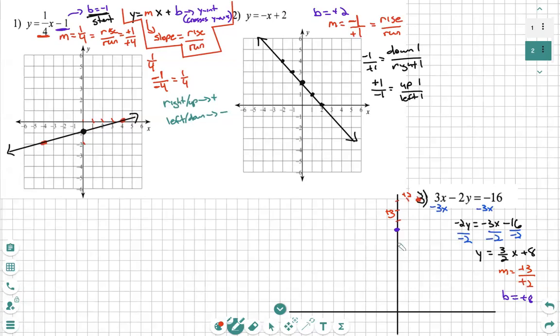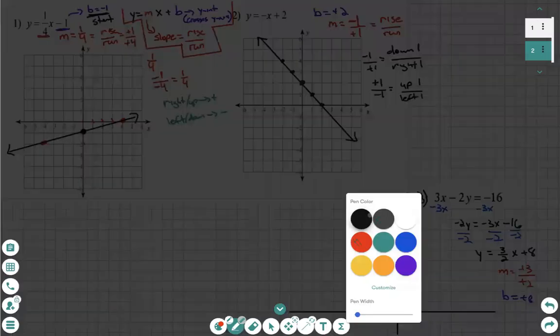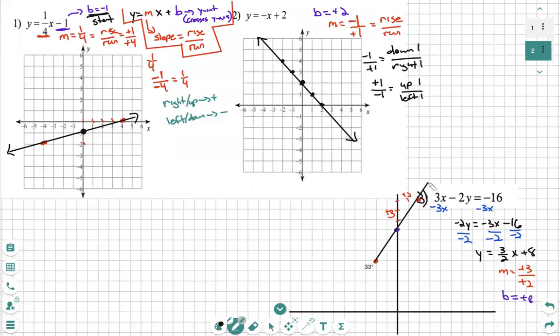And then again, mirror, down three, left two to continue the line. As we can see, it would be negative three over negative two. And then we graph. Oh, wow, I actually did a good line this time. Perfect. So as you can see, these lines are very easy to graph if we know what we're looking for.